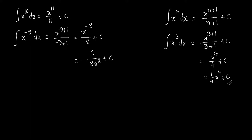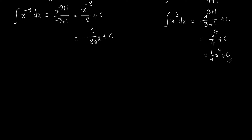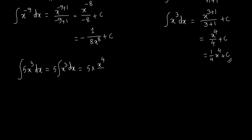If there is a constant in front of the expression — say 5x to the power 3 — we isolate the constant in front of the integration: 5 times the integral of x³ dx. Applying the integration rule gives 5 times x to the power 4 divided by 4, plus C, which simplifies to 5 over 4 times x to the power 4 plus C.